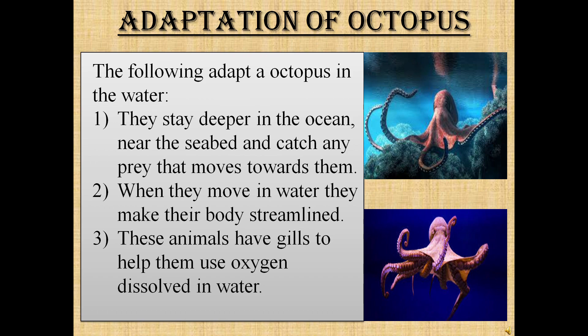Adaptation of octopus. First, they stay deeper in the ocean, near the seabed, and catch any prey that moves towards them. Second, when they move in water they make their body streamlined. Third, these animals have gills to help them use oxygen dissolved in water.